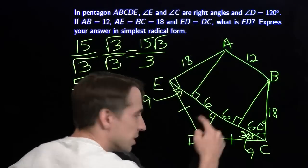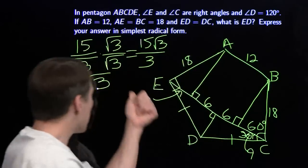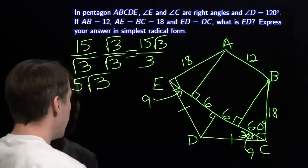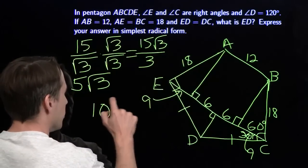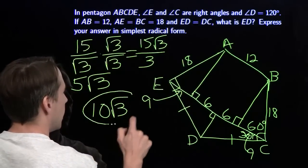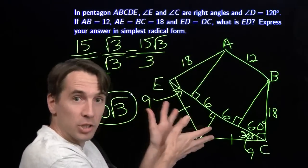So this short leg is 5 times the square root of 3. In a 30-60-90 triangle, to get the hypotenuse I double the short leg, giving 10 times the square root of 3. And there we are. Build right triangles.